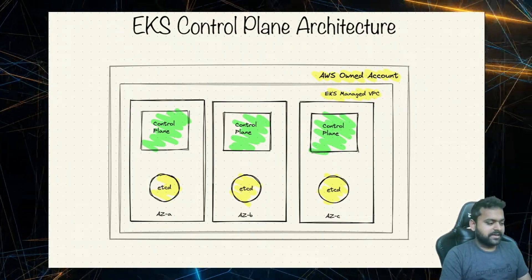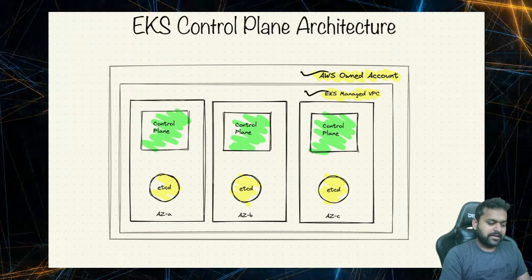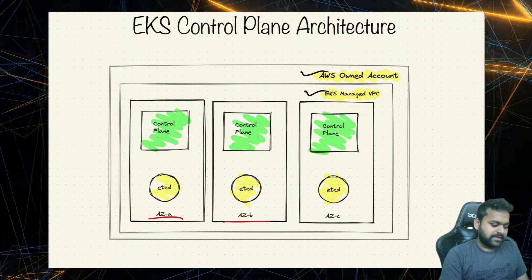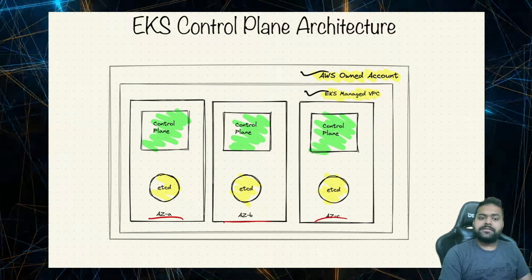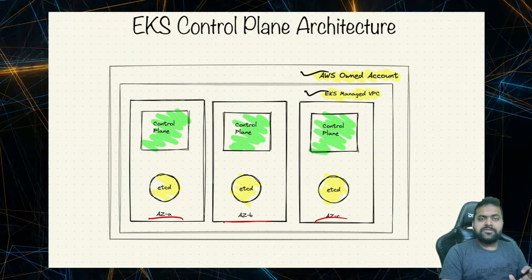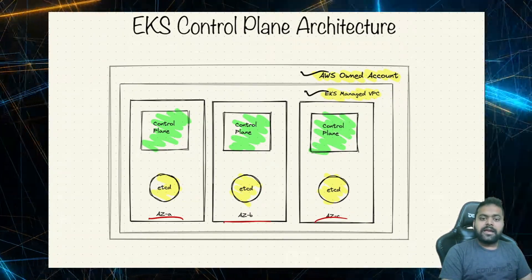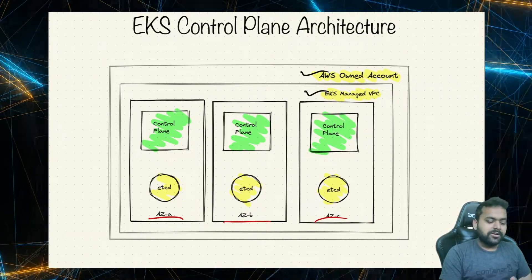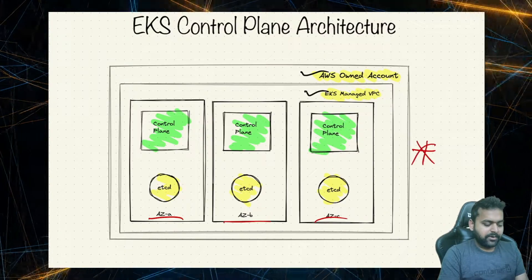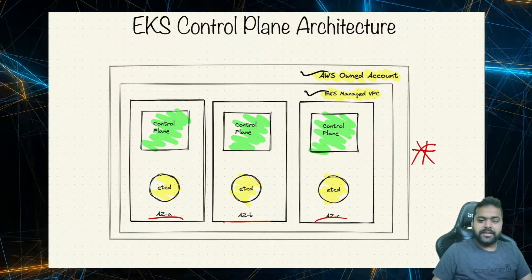Let's quickly recap: as we said, it runs in an AWS-owned account in their EKS-managed VPC, and in each availability zone it runs a portion of it. This is more about the control plane — when you actually try to spin up the cluster, this is what gets created under the hood, which we can't see. All we get is one endpoint, to which our data plane and we as a user can access.